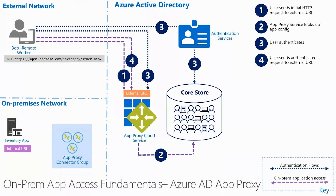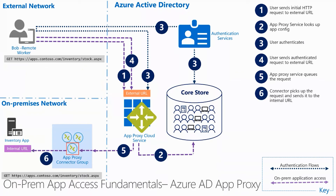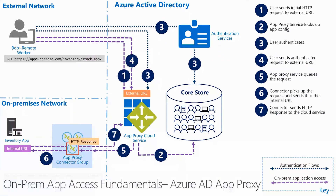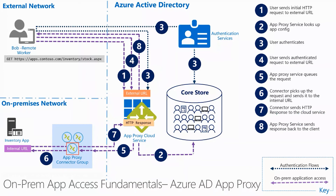The App Proxy Cloud Service will validate the token and is now ready to reach back to on-prem. In step five, the App Proxy Cloud Service queues up the message for a connector on-premises to relay to the internal on-premises web server. When a connector in the on-prem network picks up the request from the Proxy Cloud Service, it sends the HTTP request to the internal URL in step six. Once the connector receives the HTTP response in step seven, it will send it back to the cloud service, which in turn sends it back to Bob in step eight. Subsequent requests to the inventory app will reach the App Proxy Cloud Service and, since the user was already authenticated, it will go straight to the App Proxy connector and so on.